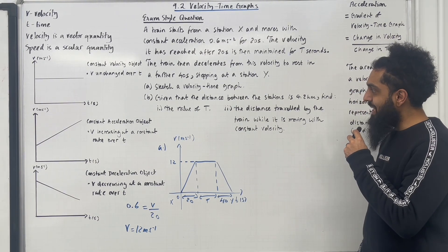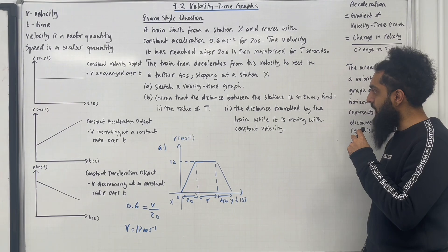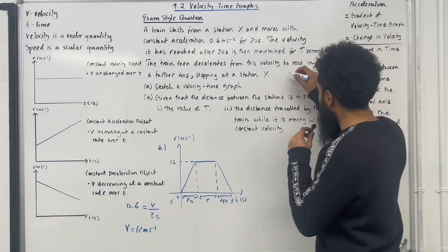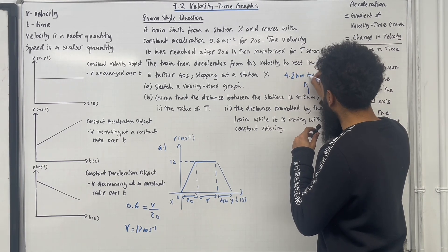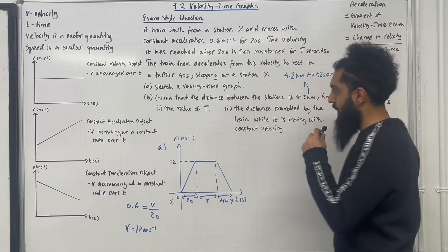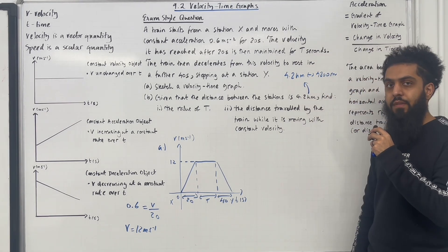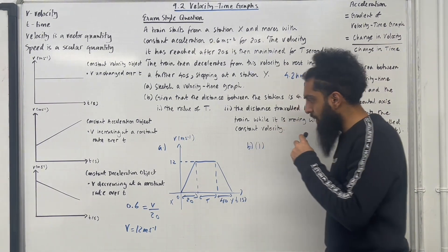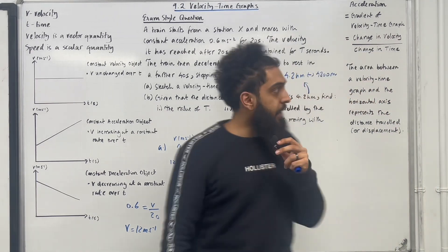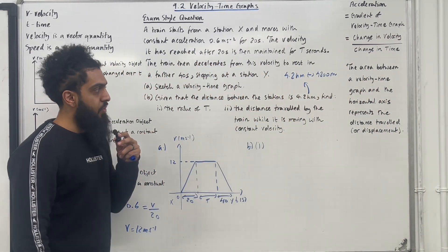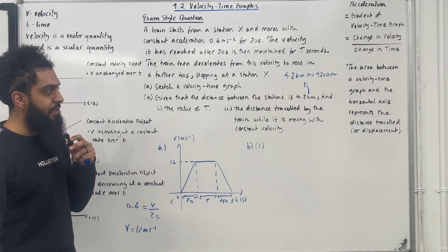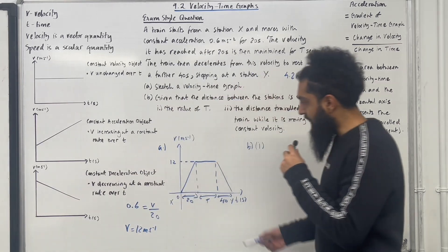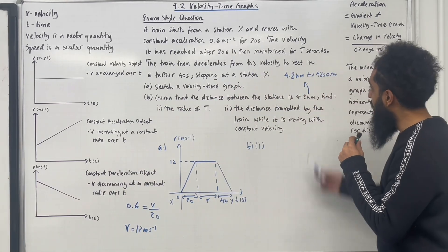Part B: given that the distance between the stations is 4.2 km — in mechanics, distance is measured in metres, so 4.2 km is equivalent to 4,200 metres. Find part 1: the value of T. The area between the velocity-time graph and the horizontal axis represents the distance travelled, so the area of the trapezium has to equal 4,200.